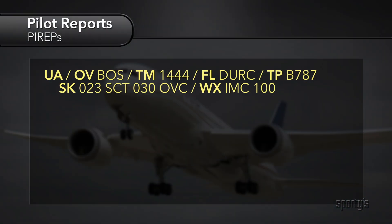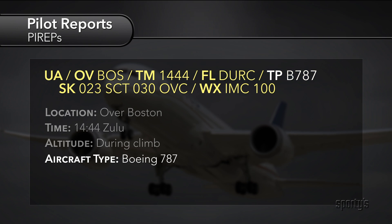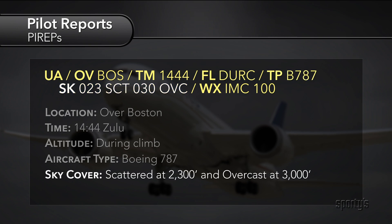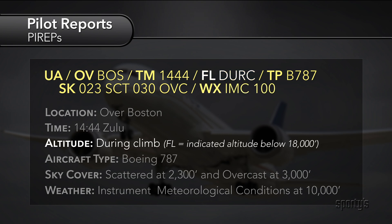Here is an example of a pilot report over Boston at 1444Z during climb, reported by a Boeing 787. Sky cover: base of the scattered clouds, 2,300 MSL. Base of the overcast, 3,000 feet MSL. Weather: instrument meteorological conditions at 10,000 feet MSL. The letters FL are for indicated altitude.